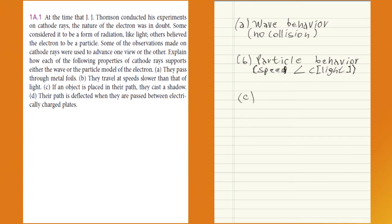It's a particle behavior, so let's go to letter C. Letter C says if an object is placed in their path, they cast a shadow. So it's a wave behavior since when the radiation is blocked by an opaque object, it generates a shadow. So I'll put here wave behavior.